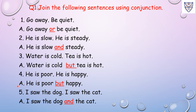Number 5: I saw the dog. I saw the cat. Answer: I saw the dog and the cat. Here 'I saw' is common in both sentences, so we are not repeating it again. We have joined the sentence with conjunction 'and', so 'and' here is a conjunction.